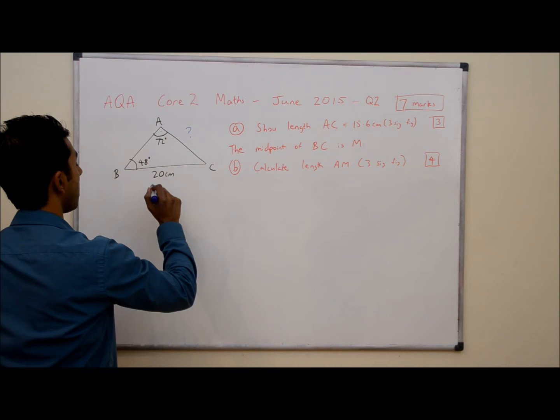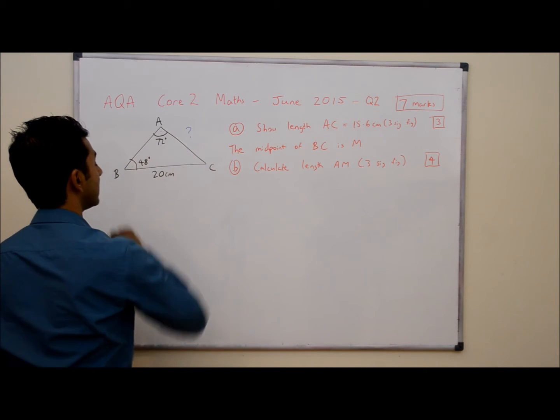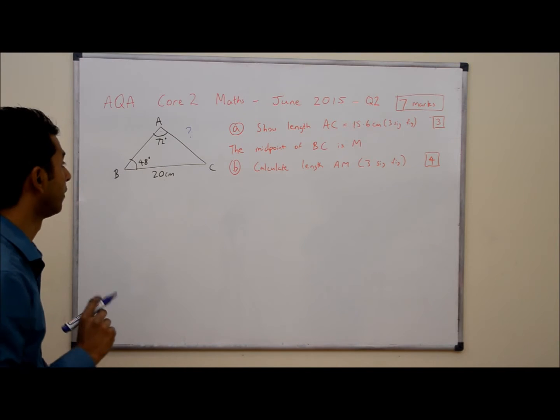We have an angle and length pair and we have another angle and we're trying to find out its length. So we're going to be using the sine rule.